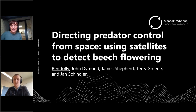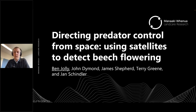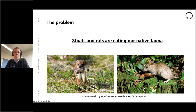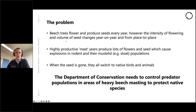Thanks Christine. Kia ora everyone. Today I'm going to talk about beech tree flowering and how we detect that in order to help DOC better target predator control efforts. The core problem we need to tackle — and I find it's often helpful to remind myself of this — is that stoats and rats are eating our native fauna. One of the drivers we are investigating is beech trees and the beech tree reproductive cycle.